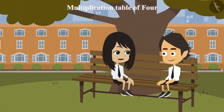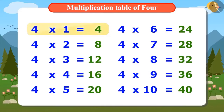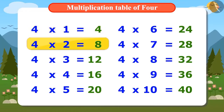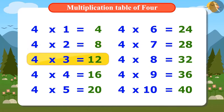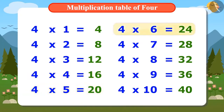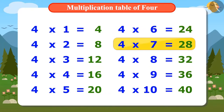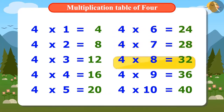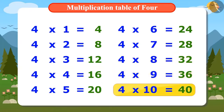Now let's memorize this multiplication table of 4 in the sing-song manner: 4×1 is 4, 4×2 is 8, 4×3 is 12, 4×4 is 16, 4×5 is 20, 4×6 is 24, 4×7 is 28, 4×8 is 32, 4×9 is 36, 4×10 is 40.